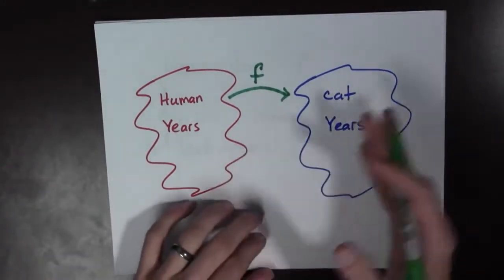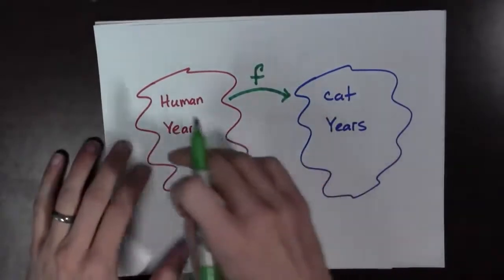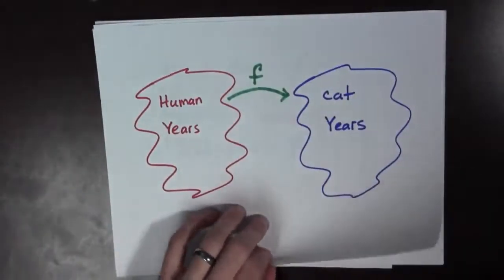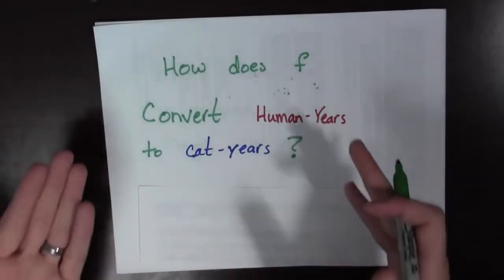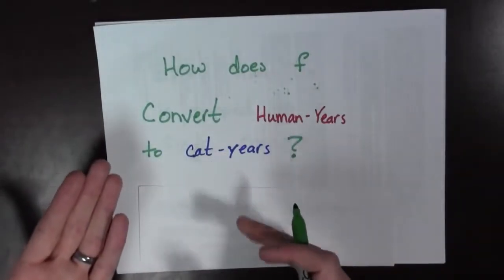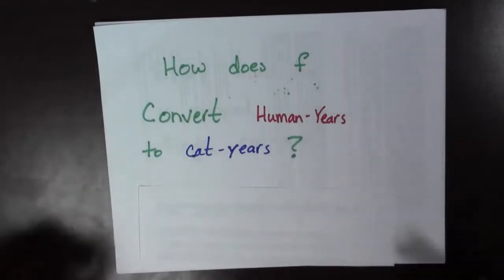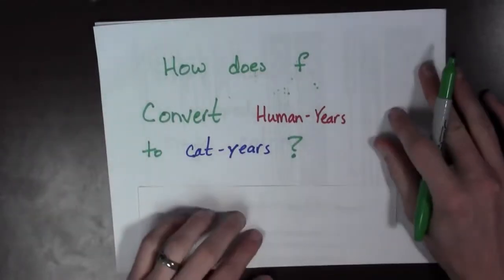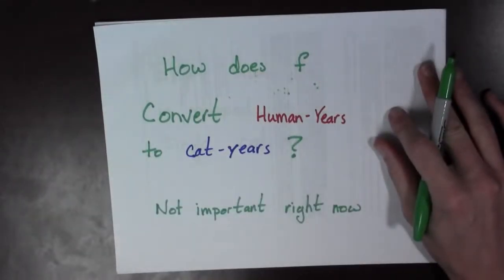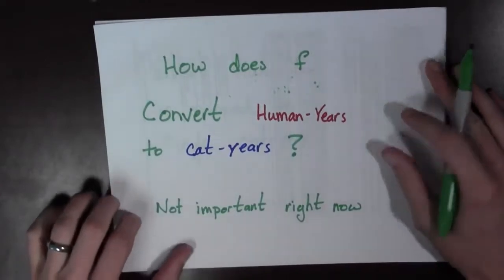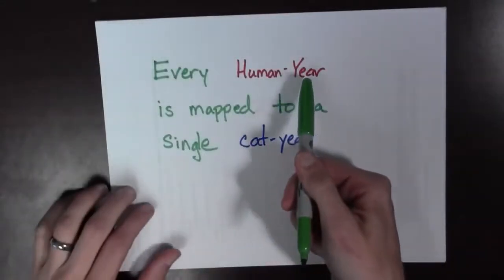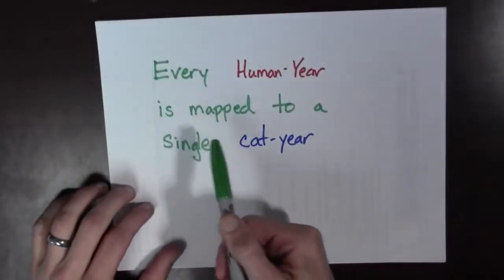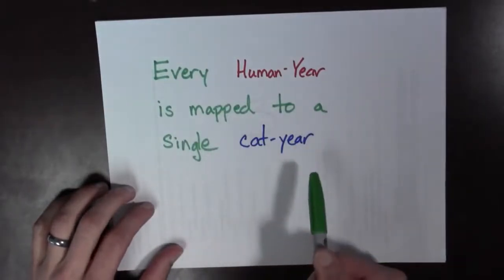And you may ask yourself, okay, so that's great, Bart. We have human years over here and we have cat years over here. But how does f actually do the conversion from human years to cat years? How does it work exactly? Well, you're not going to like this, but it's not real important right now. The important issue is that for every human year, it gets mapped to a single cat year.